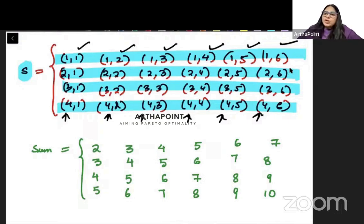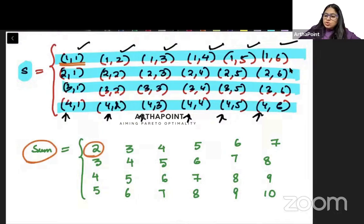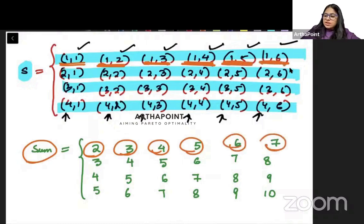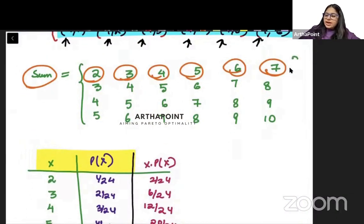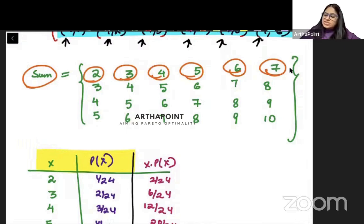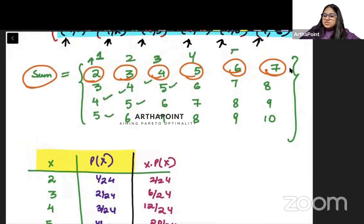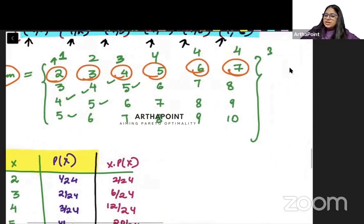Now we account for the sum. 1+1=2, 1+2=3, 1+3=4, 1+4=5, 1+5=6, 1+6=7, and so on. The frequency of each sum: frequency of 2 is 1, frequency of 3 is 2, frequency of 4 is 3, frequency of 5 is 4, frequency of 6 is 4, frequency of 7 is 4, frequency of 8 is 3, frequency of 9 is 2, and frequency of 10 is 1.